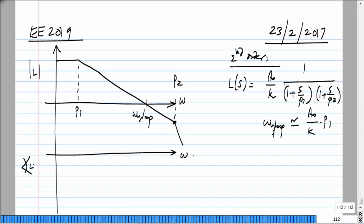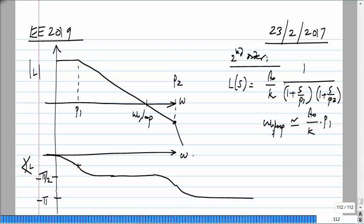The magnitude of the loop gain and its phase angle are both plotted. The angle of the loop gain goes from 0 to minus 90 degrees, stays that way over a very wide frequency range, then goes to minus 135 at P2 and eventually to minus 180. It never quite reaches minus 180, which means the second-order system is unconditionally stable — L can never be exactly minus 1. When it goes close to minus 1, that is when you have an underdamped response.